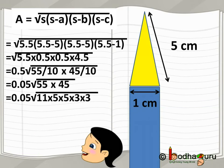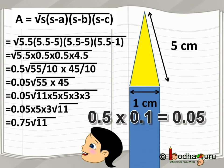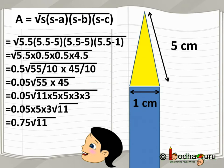Square root of 1 by 100 is 1 by 10, so 1 by 10 comes outside the square root. And what do we get? We get 0.05 multiplied by square root of 55 multiplied by 45.